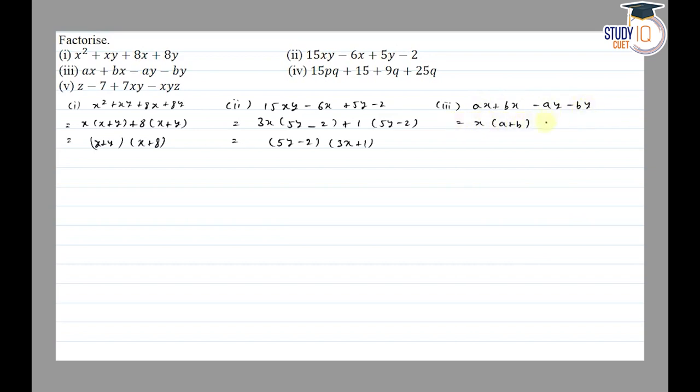So here we have x common, so here we have a plus b. Then minus y common, so here we have a plus b. Then a plus b common in two terms, so here we have a plus b and x minus y. So here we have a plus b. Then we will arrange 15PQ plus 9Q plus 25P plus 9Q.